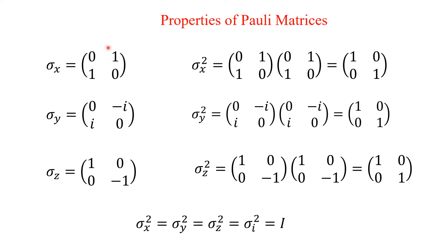These are the Pauli spin matrices. Sigma X is equal to (0, 1; 1, 0). Sigma Y is equal to (0, -i; i, 0). Sigma Z is equal to (1, 0; 0, -1). These are 2×2 matrices, so Pauli matrices are 2×2 matrices.